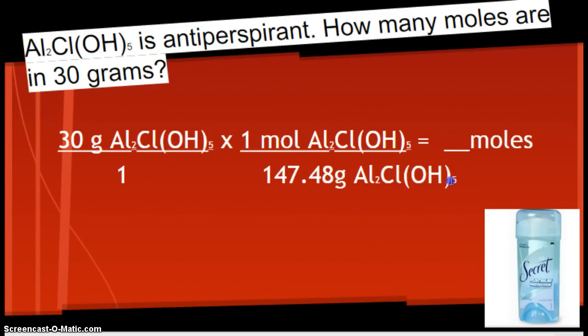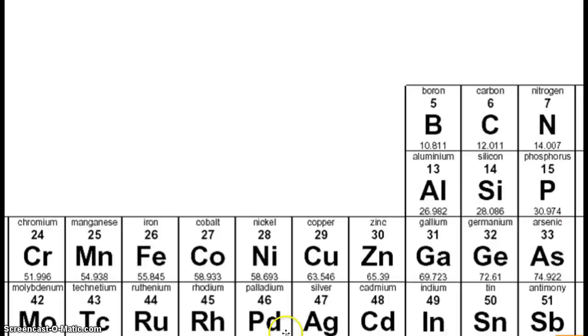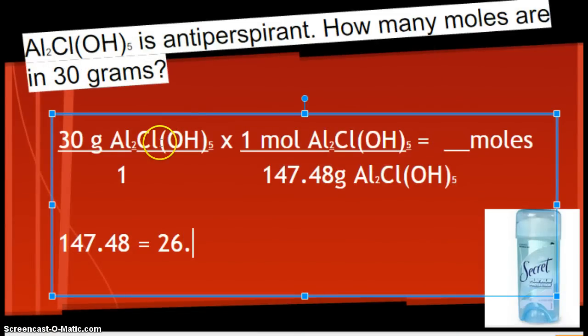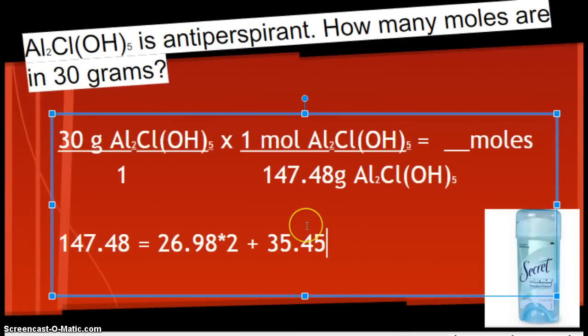If you didn't, I'm wondering if this 5 threw you off. So, how I got the 147.48, I looked up aluminum, which is 26.98. So, 26.98 times how many? There's 2 atoms in every molecule. So, times 2. Plus chlorine. Alright. So, then I look up chlorine. 35.45. And, how many chlorines are there? Just 1. Plus.